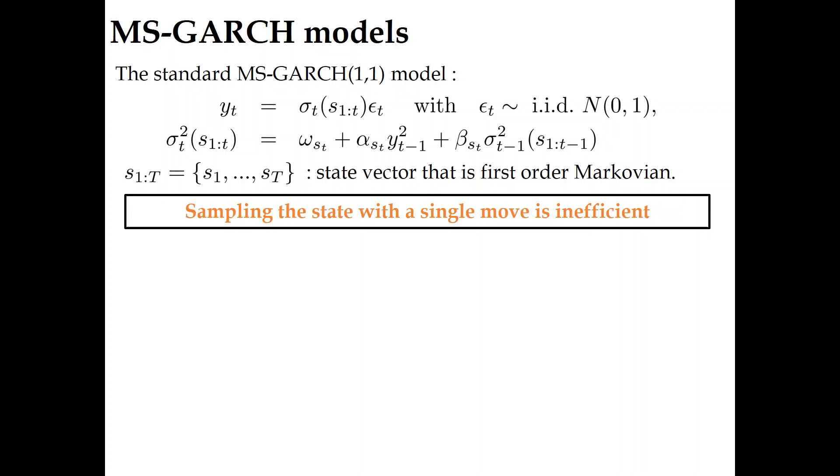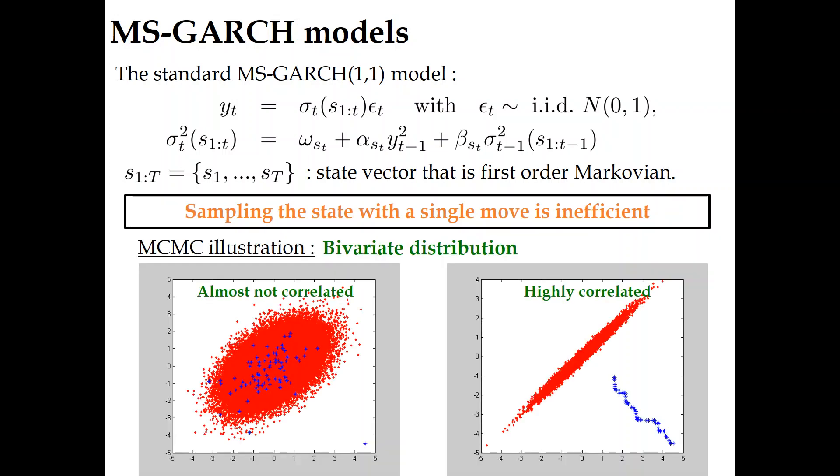In the literature, a single move that samples one state given the other states has been proposed to estimate the model. As illustrated at the bottom of the slide, when the random variables are highly correlated, as is the case with the state variables in the MS-GARCH context, they should be sampled jointly. Otherwise, the exploration of the posterior space can be very slow.